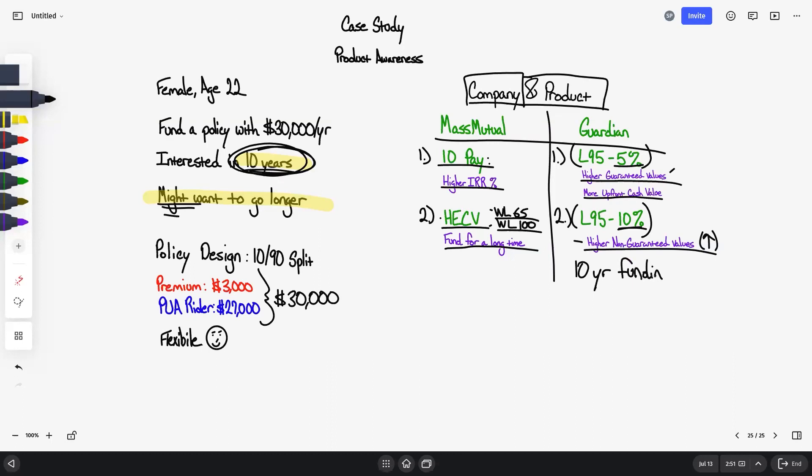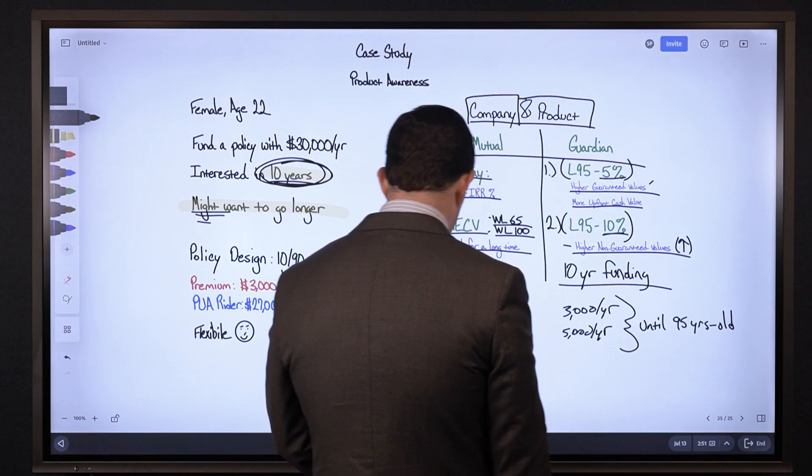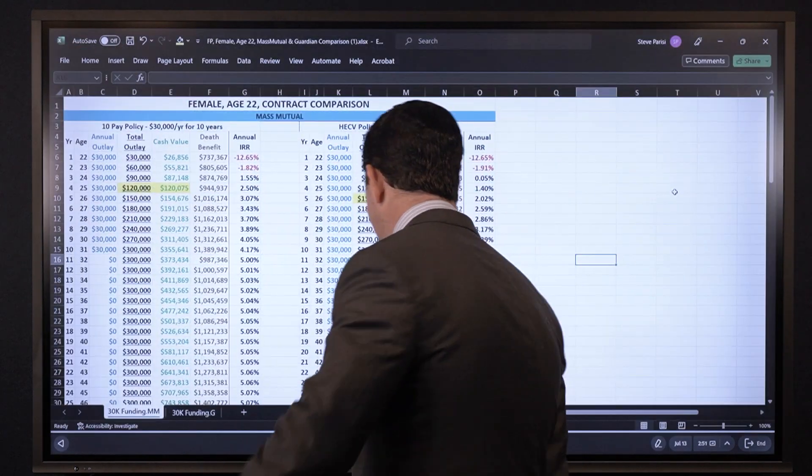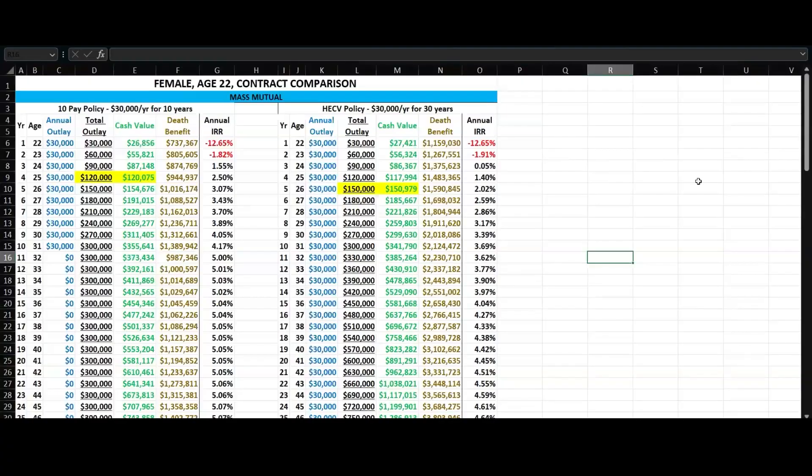There's another thing that's beneficial to be aware of. After the 10th year if she wants to keep paying, say it's just the premium or even more than that, maybe it's between $3,000 and $5,000, you can do that. For how long? Until the age of 95, so for a long time. While these illustrations will display funding stopping after 10 years, she does not have to do that.